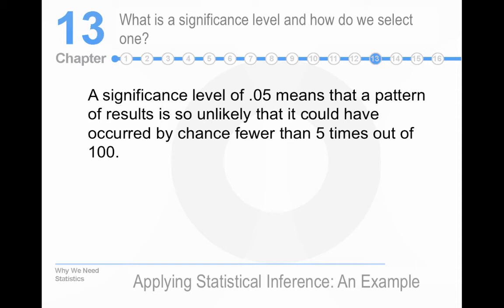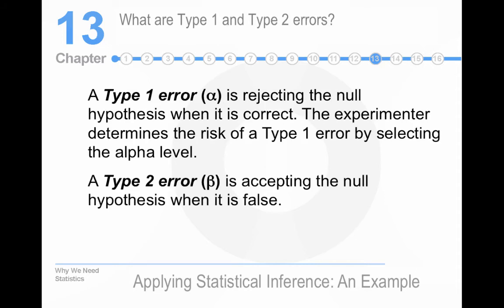We could also go with 0.01, which means one time in 100. Or 0.001, which means one time in 1,000. We can set a more stringent criteria for the alpha if we choose. It's really up to the researcher. But, there are consequences, like Type 1 and Type 2 errors.